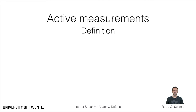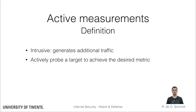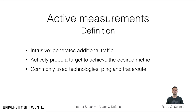Let's start with active measurements, which can be quite intrusive by generating additional traffic on top of the production network. Active measurements are typically done by probing a certain target to achieve the desired metric. The most common tools in active measurements are ICMP requests, also known as ping, and trace routes.